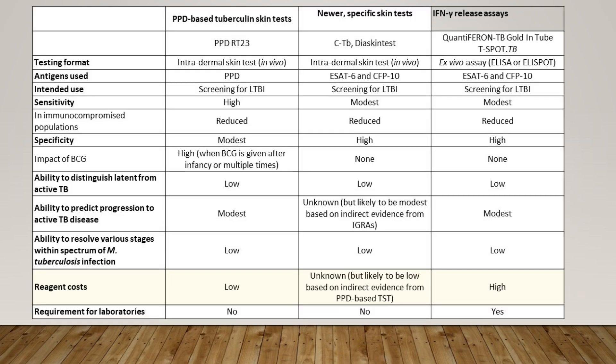The available tests are the Mantoux test, the CTBT, and the Quantiferon TB Gold test. Specificity is high for CTBT and Quantiferon TB Gold, and very low for the Mantoux test. For all three tests, you cannot predict disease versus infection. The antigens used are different, so you will get sensitivity and specificity data for latent TB caused by MTB in these patients.